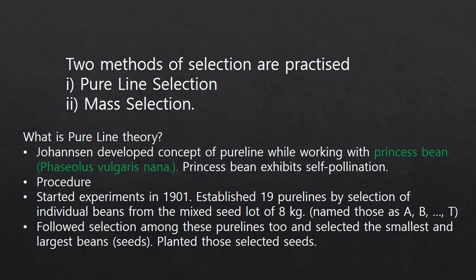There are two methods of selection practiced these days: one is pure line selection and the other is mass selection. Before going into the topic of pure line selection, we should know what pure line theory is.